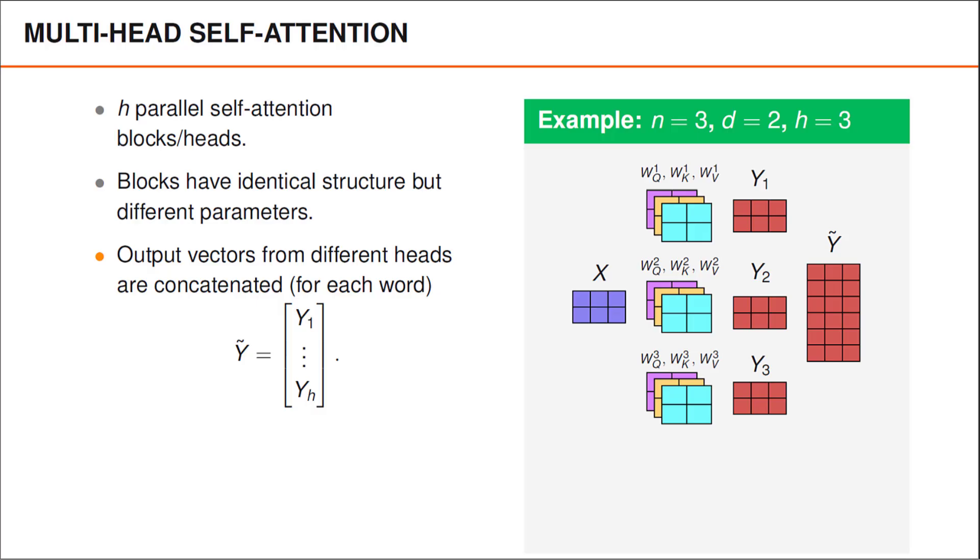In the example, we obtain y tilde by stacking the matrices y1, y2 and y3. The first column of y tilde now contains the word embedding for the first word. The second column of y tilde contains the word embedding for the second word, and so on. As you can see, these vectors are now three times longer.